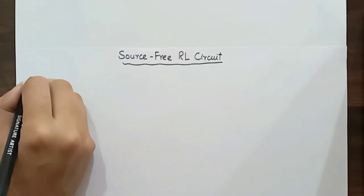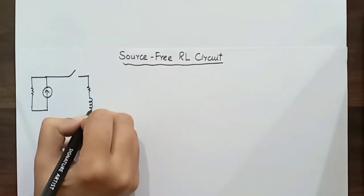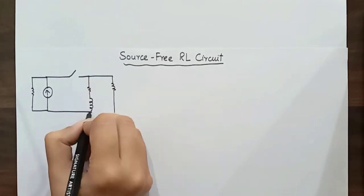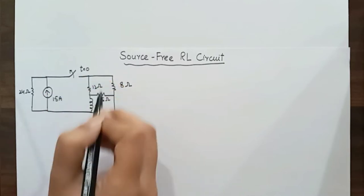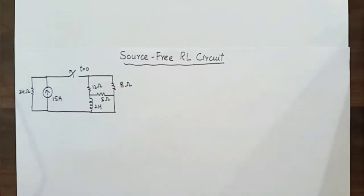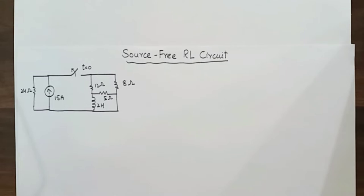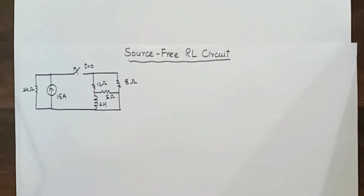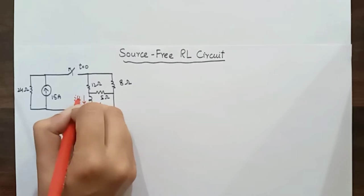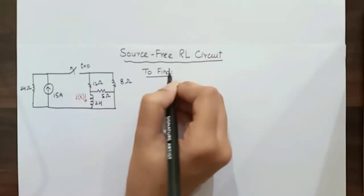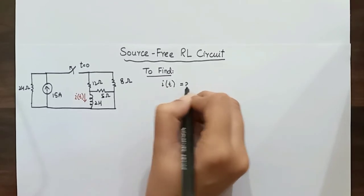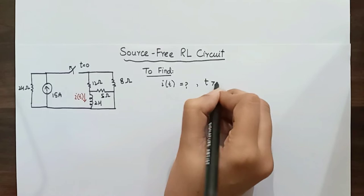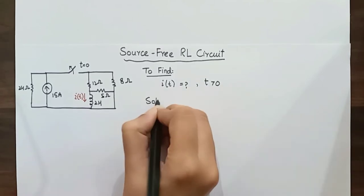Let's draw the circuit first and here is the inductor. This switch will open when time t is equal to zero and will be closed initially when the time is less than zero. The switch is closed and the inductor gets charged through this current source. The current flowing through the inductor is denoted by i(t). Now what we have to find is i(t), the current flowing through the inductor when the time t is greater than zero. So let's move to the solution.